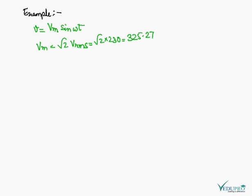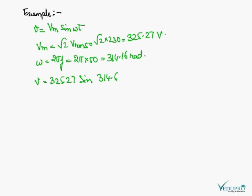Now omega is 2 pi f, that means 2 pi into 50, which is equal to 314.16 radians per second. So V will be 325.27 sine 314.16 t volts.